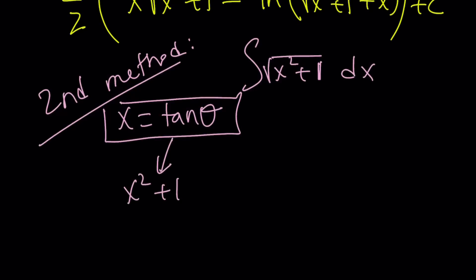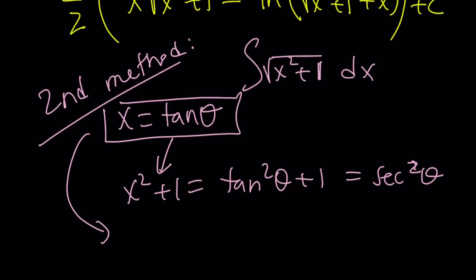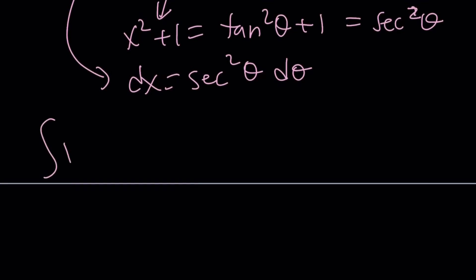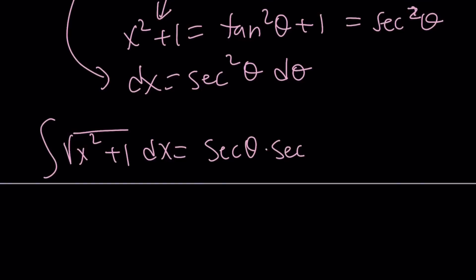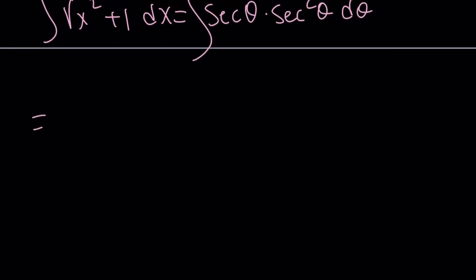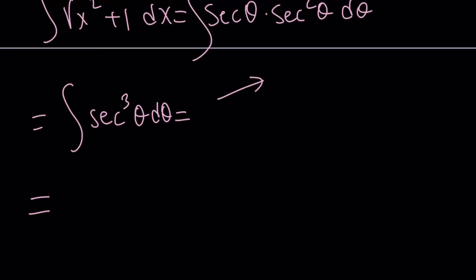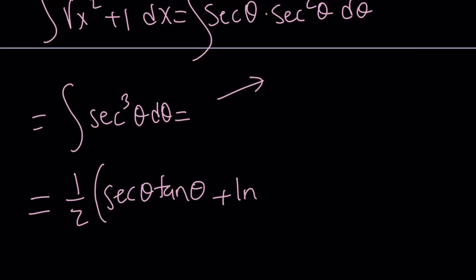What is x² + 1? It is tan²θ + 1, which is sec²θ. What is dx? If x = tan θ, then dx = sec²θ dθ. Putting it all together inside the integral, you get secθ × sec²θ dθ, which is the integral of sec³θ dθ. I already made a video on that — you can go ahead and watch it. The integral of sec³θ is ½ secθ tanθ + ½ ln|secθ + tanθ| + C.